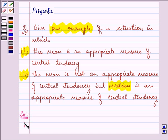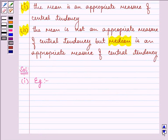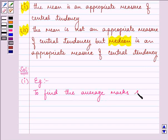So for the first case, an example where the mean is an appropriate measure of central tendency is to find the average marks scored by students.